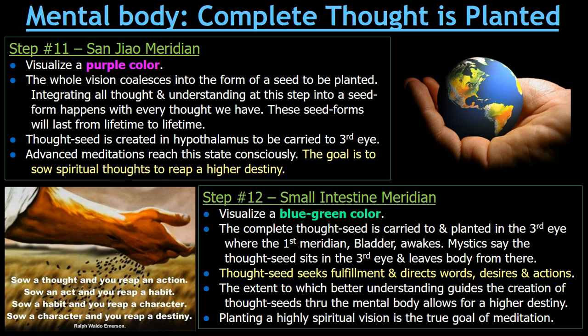We can see from Step 1 all the way to Step 12 this complete process and development of the mental body — from a state of pure nothingness where movement begins, light comes in and fills, then images are created, then forms and interactions and logic, then understanding and harmony, unifying this interaction, then condensing it down into what we understand and believe. And that creates the thought seed form which determines our behavior and also affects the behavior of others. These are profound aspects of the mental body.